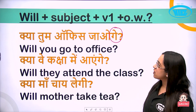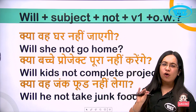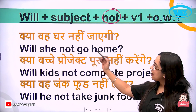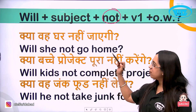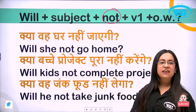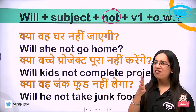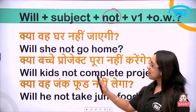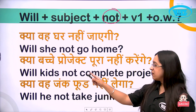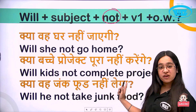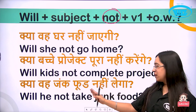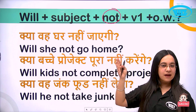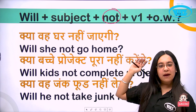Now let's see negative examples — we simply add 'not.' 'Kya woh ghar nahi jayegi' — Will she not go home? If positive is 'Will she go home,' negative is just 'Will she not go home.' Same pattern: 'Kya bachche project pura nahi karenge' — Will kids not complete the project? 'Kya woh junk food nahi lega' — Will he not take junk food? In negatives, just add not after the subject.